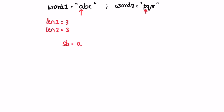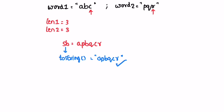In the next iteration we increment the pointers. We extract 'b' from word1 and 'q' from word2, then increment again and extract the characters at those pointers. Now we reach the end of both strings and end the iteration. We have our answer inside the StringBuilder. Using the toString method we convert it to a string and return it as the output.